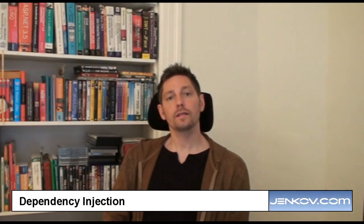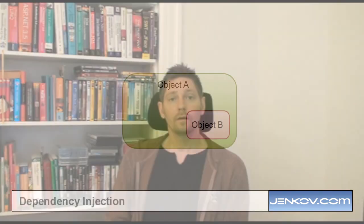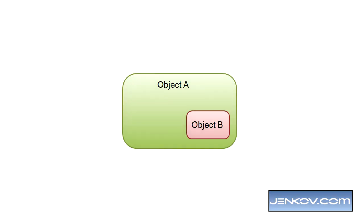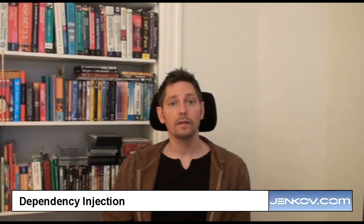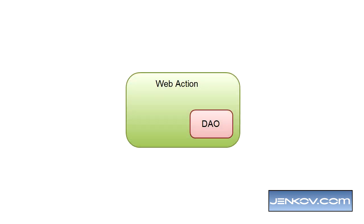An object A depends on another object B if object A needs object B in order to execute correctly. For instance, a web action class might need a data access object in order to execute correctly. The web action might need to read data from the database or store data in the database, and this database access might be hidden under a data access object layer.